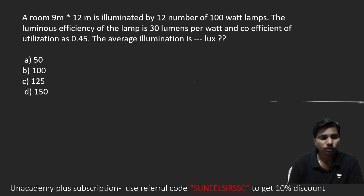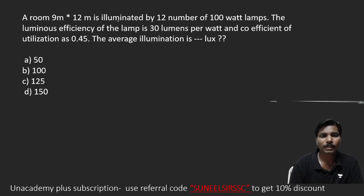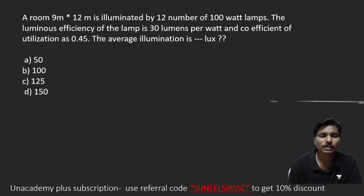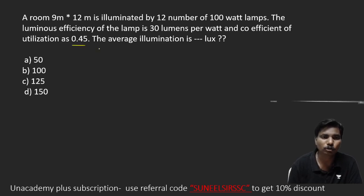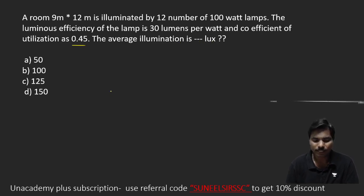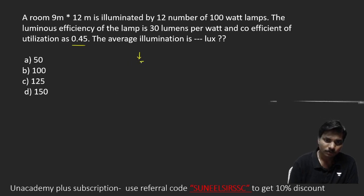In this question, a room 9 meters by 12 meters is illuminated by 12 number of 100-watt lamps. The luminous efficiency of the lamp is 30 lumens per watt and the coefficient of utilization factor is 0.45. Find the average illumination in lux. Here they are asking for illumination.